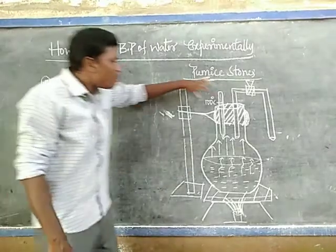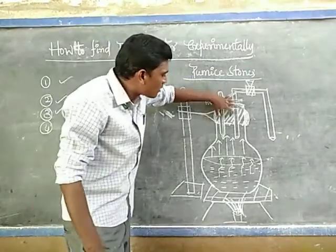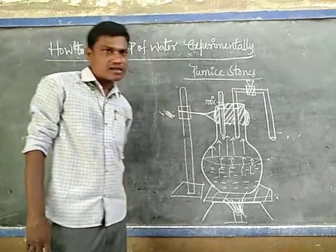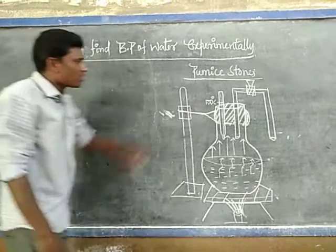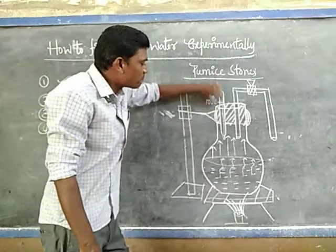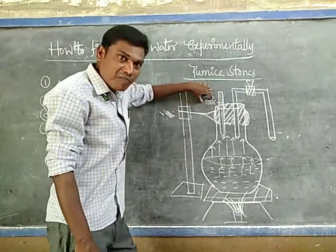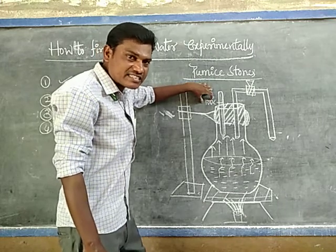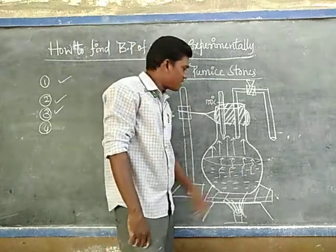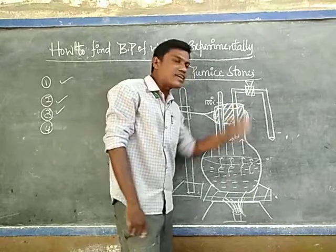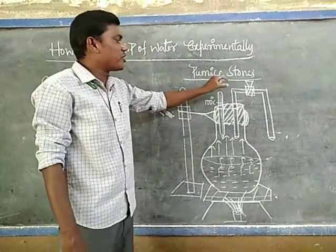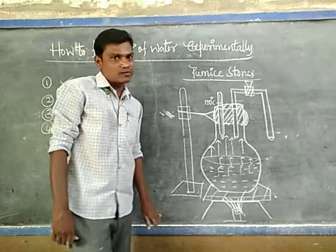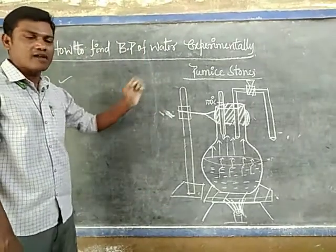The open end of the round-bottom flask is closed with a two-hole rubber cork. Through the first hole, we keep a laboratory thermometer — its range is minus 10 degrees Celsius to 110 degrees Celsius. Through the other hole, we place the delivery tube, which contains a valve used for opening or closing to control steam release.